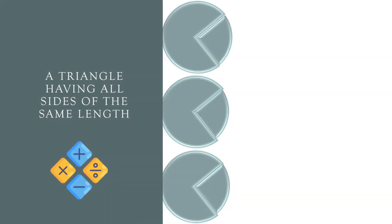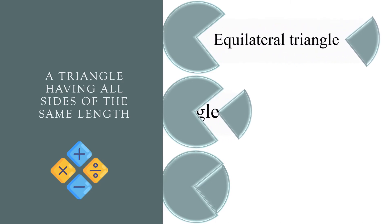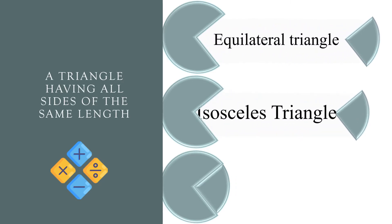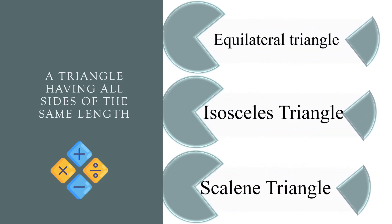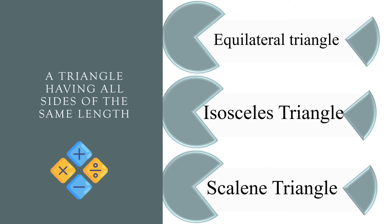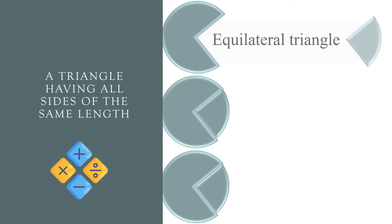A triangle having all sides of the same length. Equilateral triangle, isosceles triangle, or scalene triangle? The correct answer is equilateral triangle.